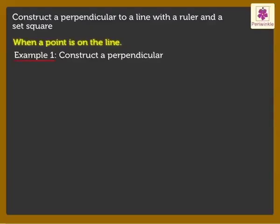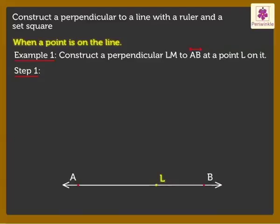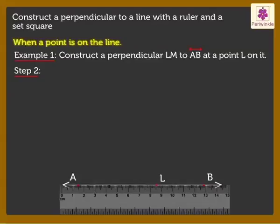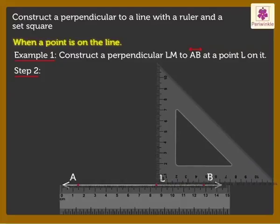Construct a perpendicular LM to Line AB at a Point L on it. Step 1: Draw Line AB with a Ruler. Mark a Point L on it. Step 2: Keep the Ruler on Line AB. Slide a Set Square along the Ruler till its vertical edge reaches the Point L. Mark Point M along the vertical edge of the Set Square.